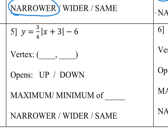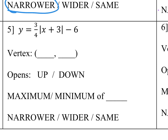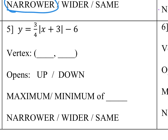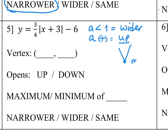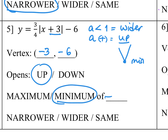Number 5: A is 3 over 4, which is less than 1, so the graph will become wider. A is positive, so it opens up, and when opening up the vertex is at its minimum. The vertex is going to be negative 3 and negative 6. It opens up because A is positive, giving a minimum value of negative 6. Because 3 over 4 is less than 1, the graph will become wider.